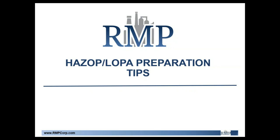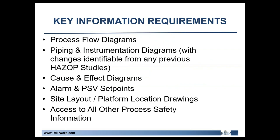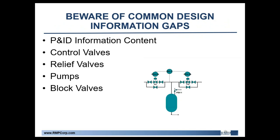For HAZOP and LOPA preparation, some key information requirements include process flow diagrams, P&IDs, cause and effects diagrams, alarm and PSV set points, and all kinds of other process safety information. A major setback for HAZOPs is time spent looking up key information — that valuable time can be spent focusing on the actual study as long as you're sufficiently prepared ahead of time. Things to consider compiling beyond the normal P&IDs include MOC and PSSR documentation, previous PHAs with their recommendations and current status, maintenance records, system descriptions, toxic chemical and physical properties, operating procedures, emergency procedures, and accident history.